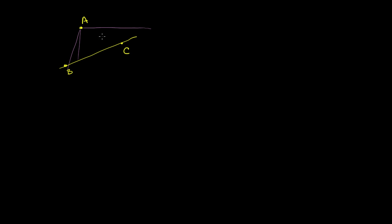Distance seems very straightforward between two points, but what about a point and a line? Because there are many points on this line. So maybe we're going to find this distance, or maybe this distance, or maybe this distance. And these are all going to be different lengths. So how do we have one unique distance?